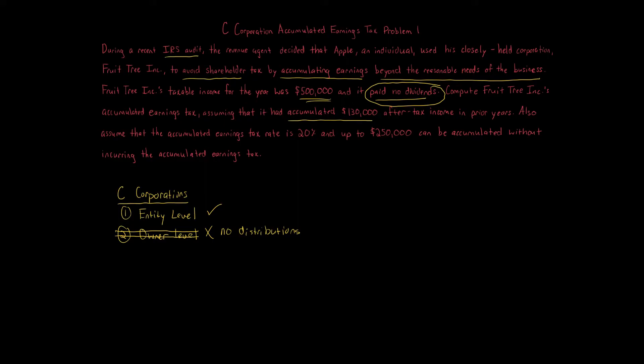This is especially common in closely held businesses with one owner or just a few owners. When you see a solely owned C corporation with no earnings being paid out, the IRS will often come in and scrutinize that. You better have a reason to retain those earnings. This corporation is getting hit with a potentially 20% accumulated earnings tax.